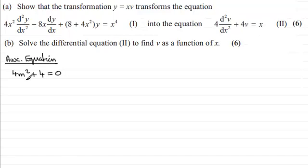So m² equals minus 1. If I square root both sides, m is going to equal plus or minus i.